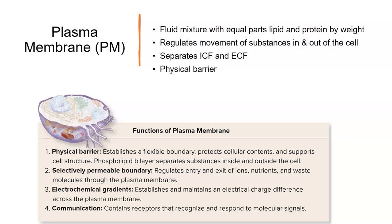The third concept is electrochemical gradients, which we'll talk about a lot later in the chapter. In one of our previous lectures, we mentioned that gradient means there's more of something on one side than there is on the other.